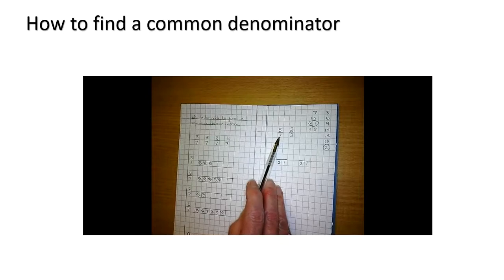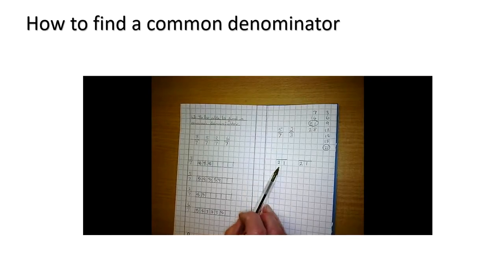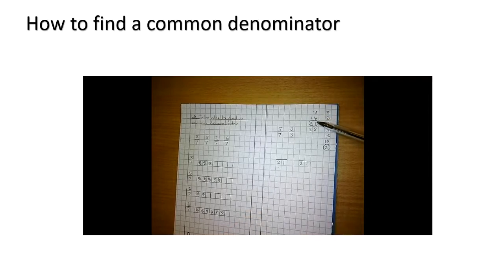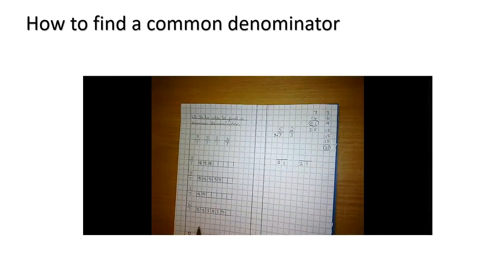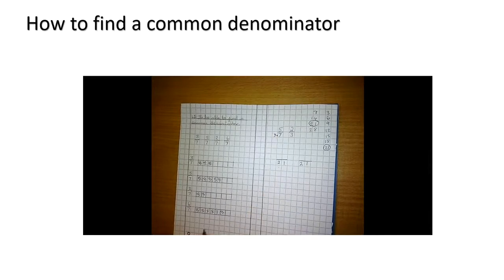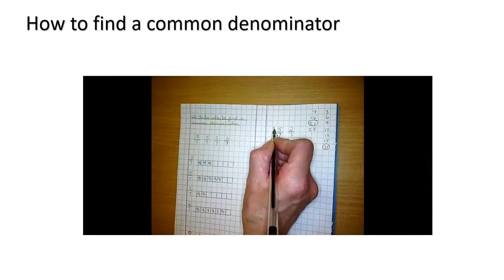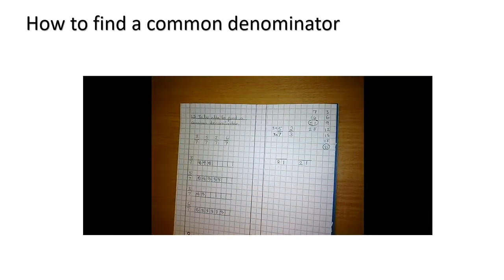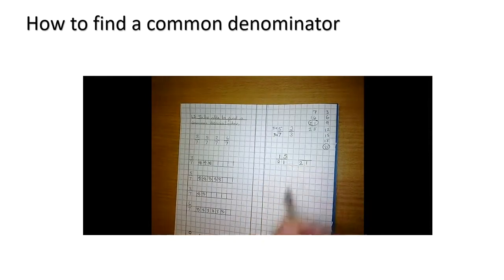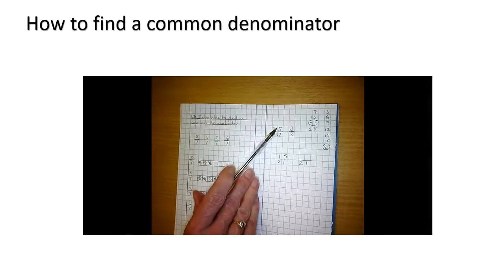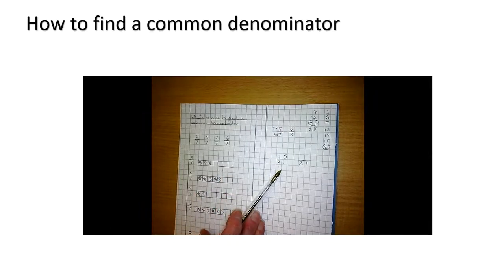How many times did I have to multiply my 7 to get to 21? 7, 14, 21. Three times. I times my 7 by 3. So what I've done to my denominator, I must do to my numerator. So I'm going to multiply that by 3 as well. So 3 times 7 was 21. 3 times 5 is 15. So I've turned my 5 sevenths into 15 twenty-firsts.